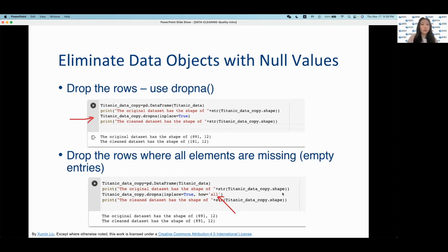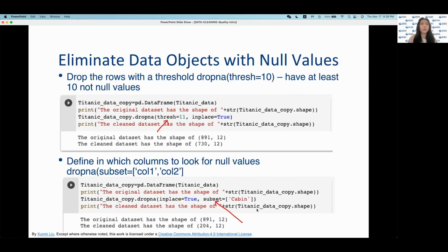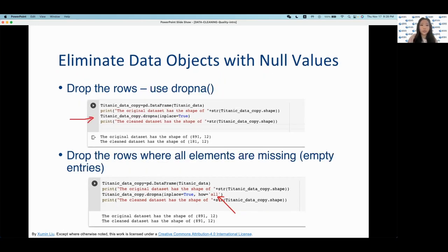There's also another parameter called the how parameter. And with this one, there are two acceptable arguments. So there is if you set how equal to all, it will drop the row only if all the values in that row are missing. And you can see that here with the how equals all with the quotations. And then also there is how equals to any. And here, dropna will drop the row if any of the values in that row are missing.